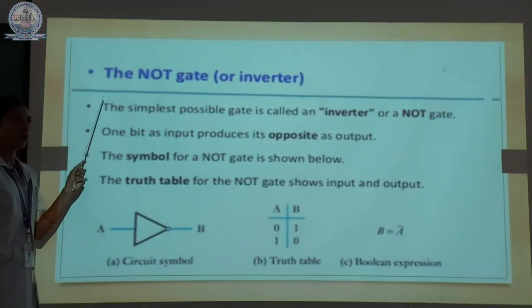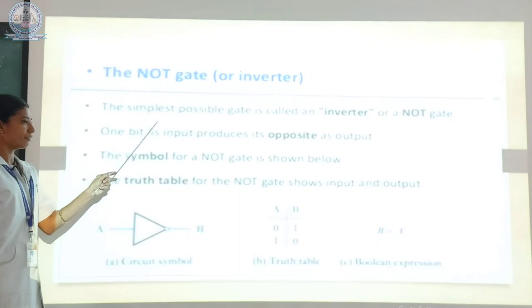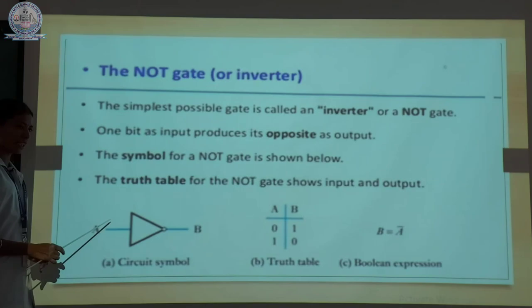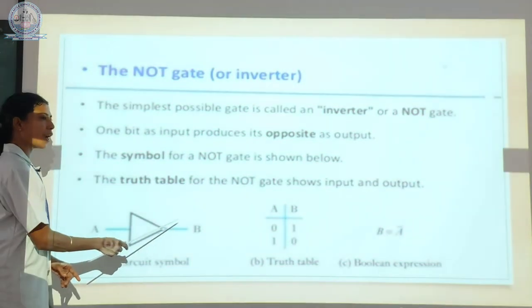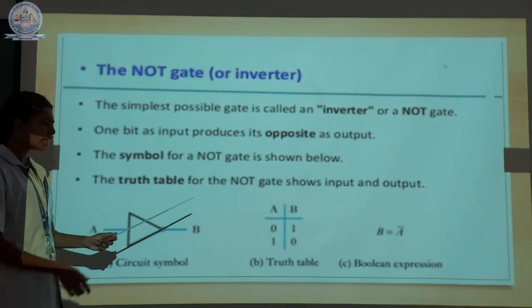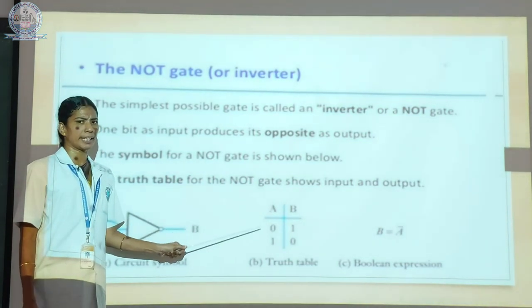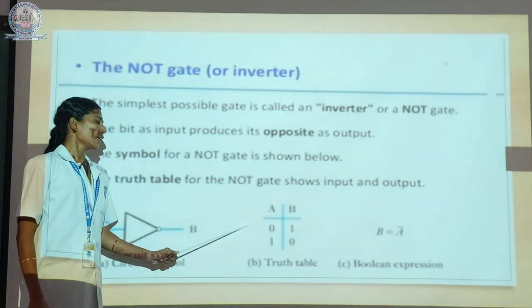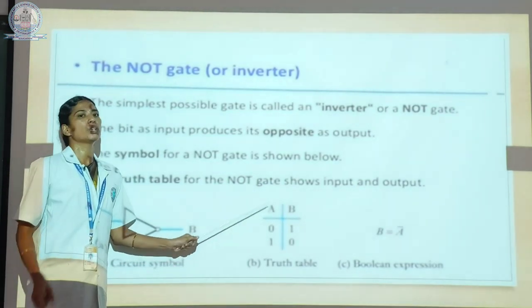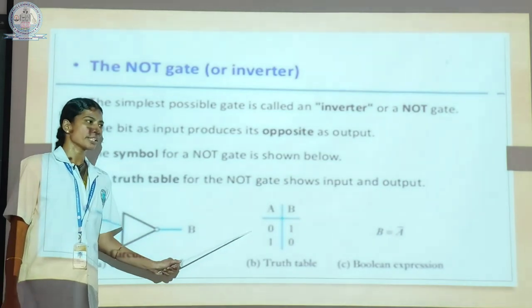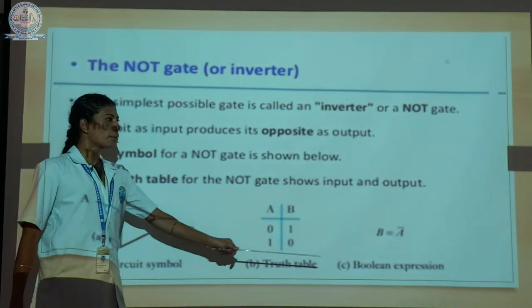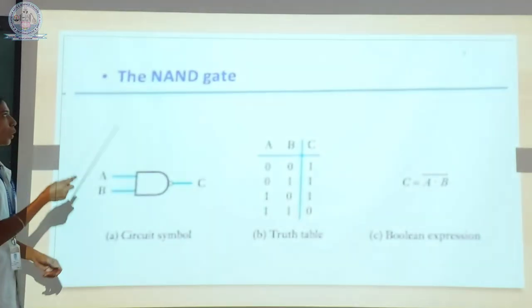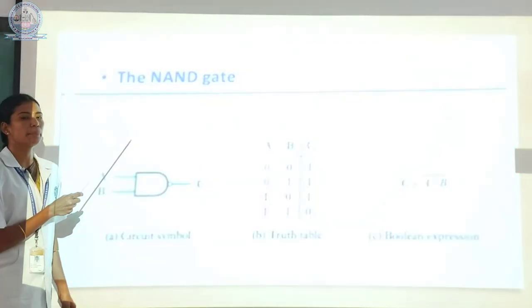Next one is the NOT gate. The NOT gate is represented as an inverter gate or otherwise a complementary gate. Here only one input signal produces only one output signal. The input signal is opposite to that of the output signal. If the input is 0, the output is high; if the input is 1, the output is low. The Boolean expression for the NOT gate is B is equal to A bar.